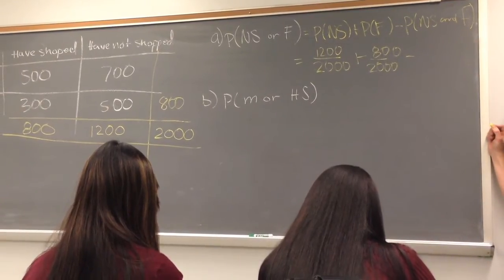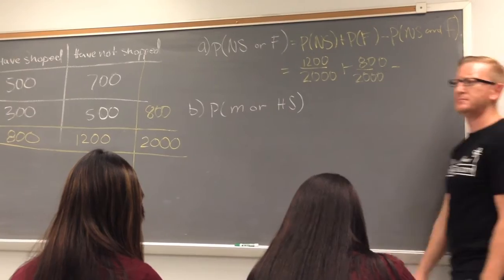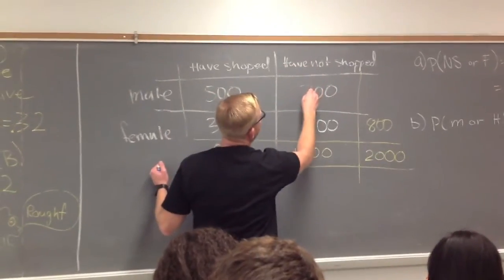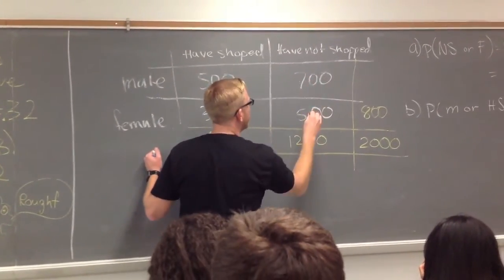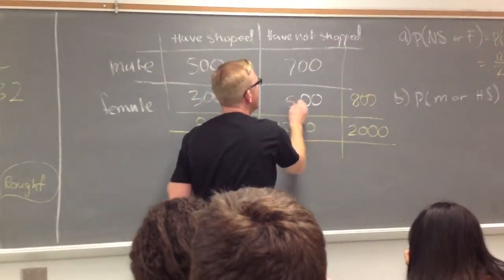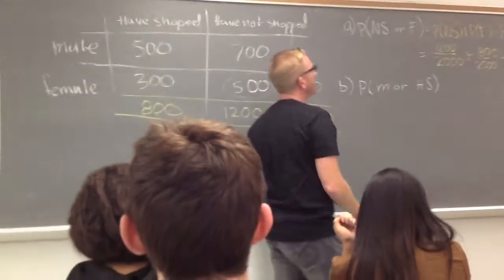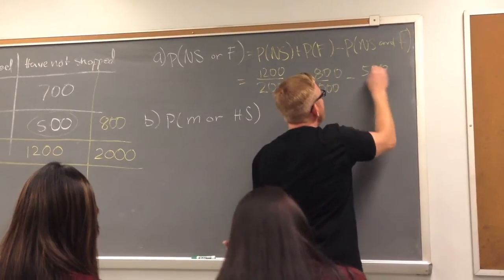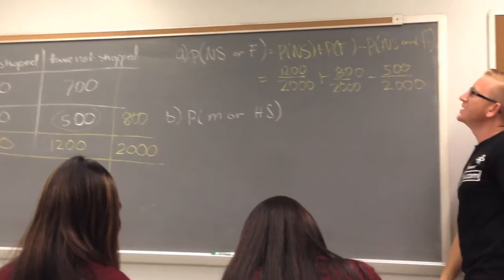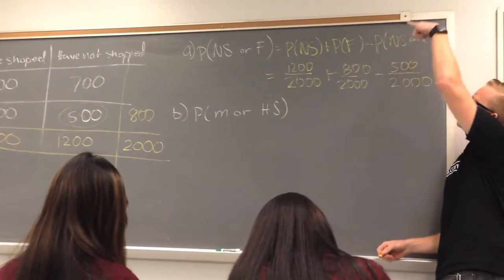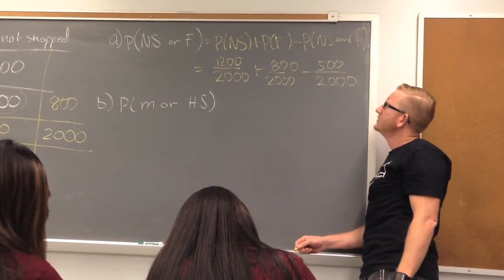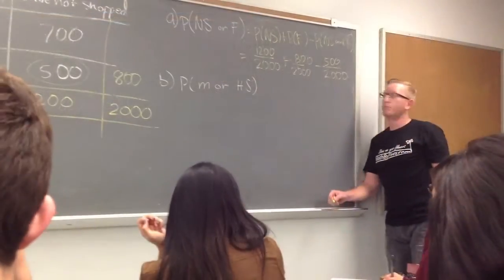Minus — now how do we do the intersection? It's literally the intersection. We're looking at the probability of have not shopped and female. So that's this piece divided by the total number, which is 500 over 2,000. Now with our common denominator, this is 2,000 minus 500, which is 1,500 over 2,000 — and then 1,500 divided by 2,000 is 0.75.